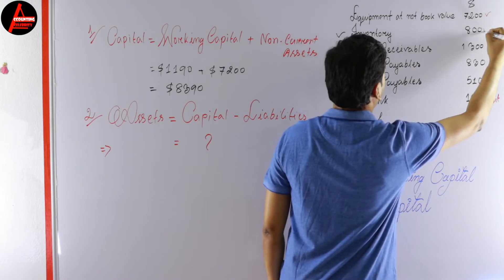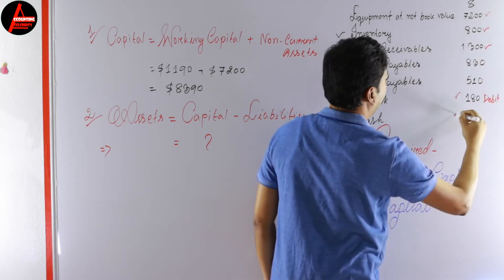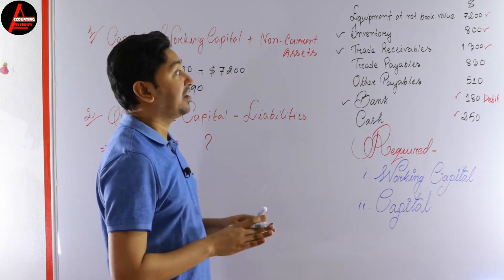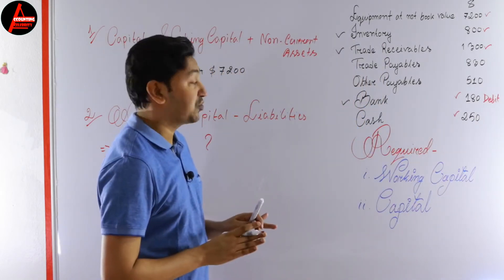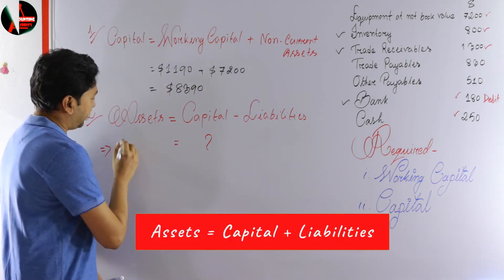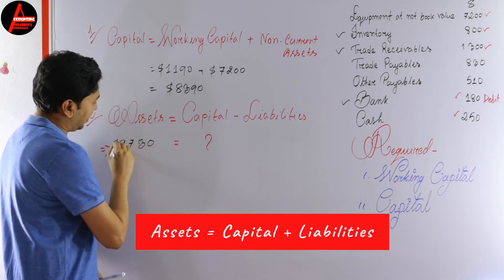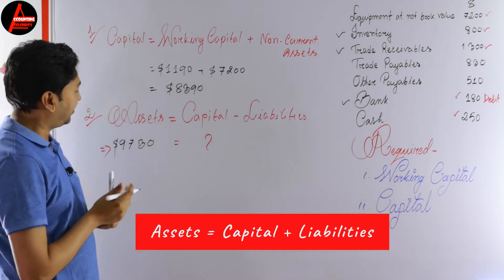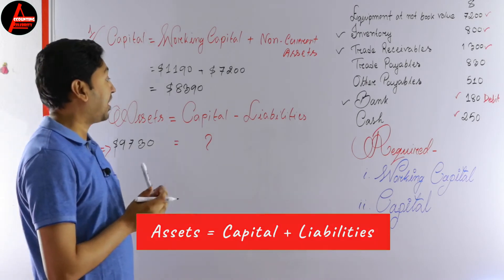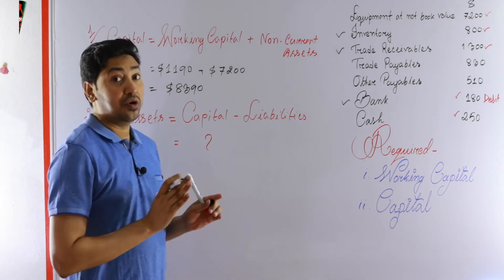In this question we have equipment, inventory, trade receivables, bank and cash. If you add all five values, we get nine thousand seven hundred and thirty dollars. This is our total assets.